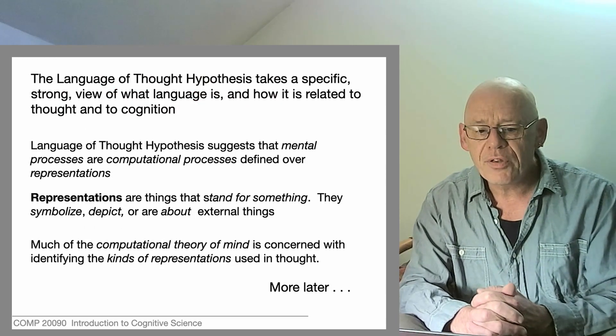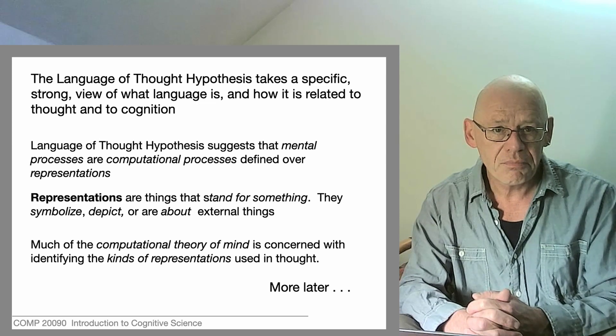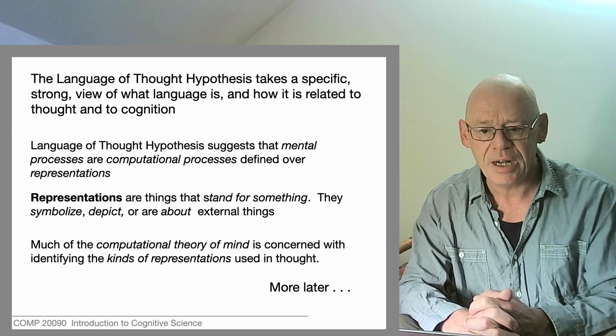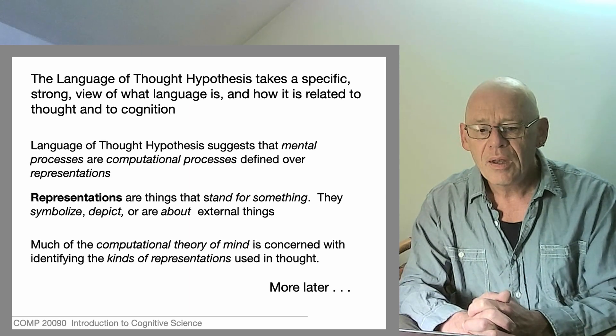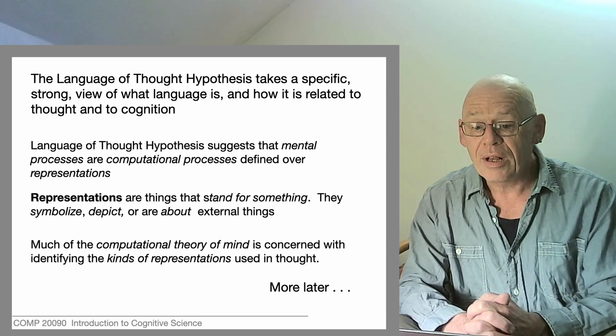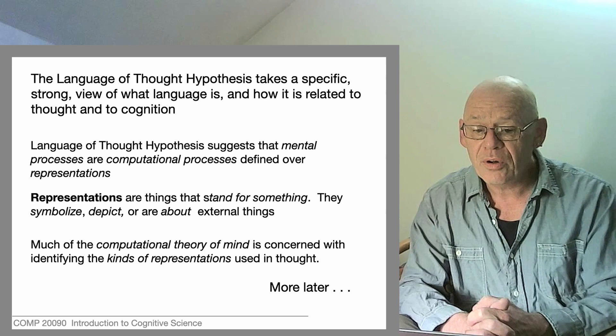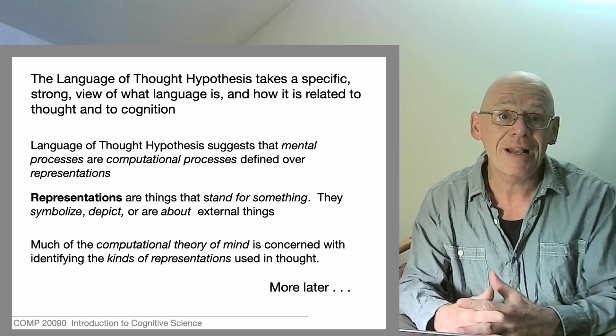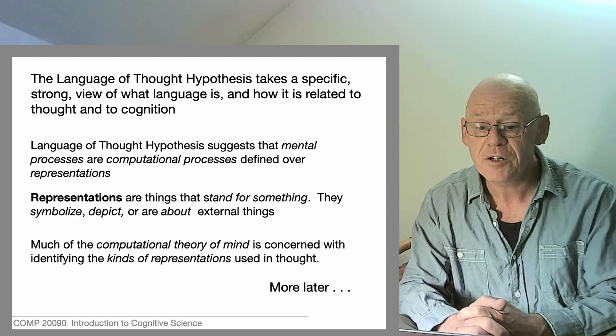Now, this language of thought hypothesis, which suggests that some aspects of thinking are very language-like in nature, it takes a strong view of what language is and how it's related to thought and to what we might call cognition. And let's say planning to rob an orchard looks like a good example of cognition.